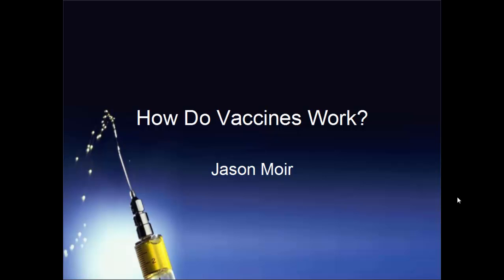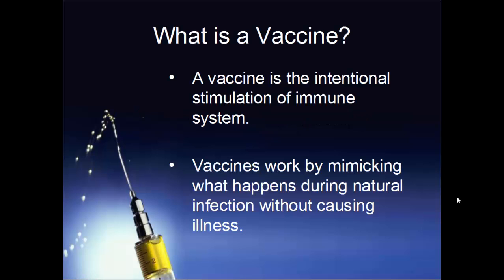Hello, welcome. My name is Jason Moyer, and in this video we'll be talking about how vaccines work. Before we talk about how vaccines actually work, it's important that we talk about what exactly a vaccine is and how they differ from each other. A vaccine is the intentional stimulation of your body's natural immune system, and vaccines work by mimicking what happens when you are infected by a virus or bacterium without actually causing you to become sick.